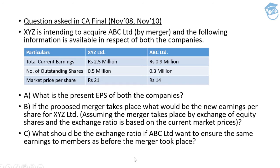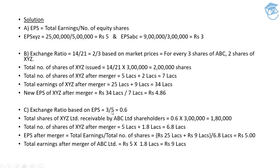Next, what should be the exchange ratio if ABC Limited wants to ensure the same earnings to its members as before the merger? The earlier EPS for ABC was rupees 3 — that is 0.9 million divided by 0.3 million. Shareholders are concerned about whether they will get the same EPS after the merger. The approach is simple: we need an exchange ratio based on EPS. EPS for ABC Limited was rupees 3 and for XYZ it was rupees 5. So the exchange ratio is 3 divided by 5, which comes out to 0.6.